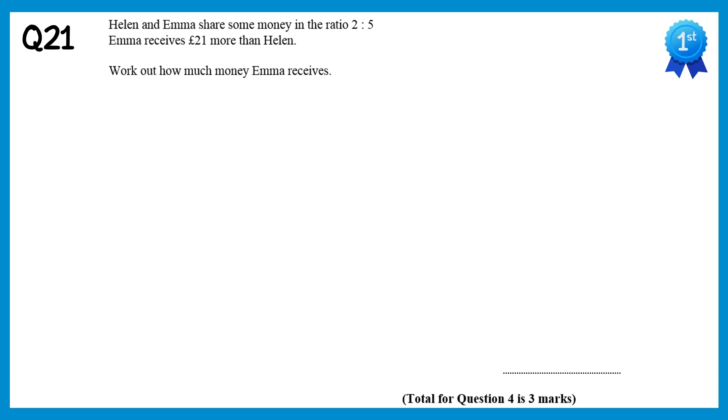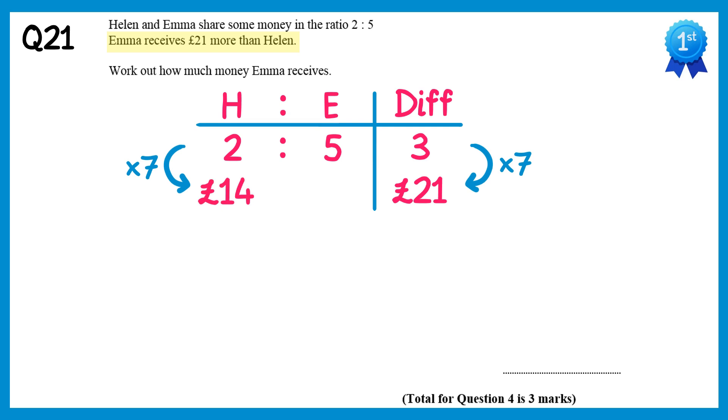In this question we have Helen and Emma, who are sharing money in the ratio 2 to 5. In the question we're told that Emma receives £21 more than Helen. This represents the difference in the amounts they receive, so we'll create an extra column for difference. The difference in the amount of ratio parts is 3, since 5 take away 2 is 3, so these 3 parts must represent the £21. To get from 3 to 21 you times by 7, so we'll times by 7 for all of the values, 2 times 7 is £14, and 5 times 7 is £35. In the question we're asked how much money Emma receives, so this must be £35.